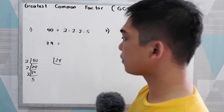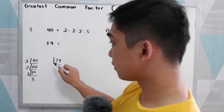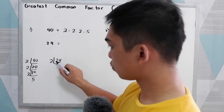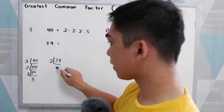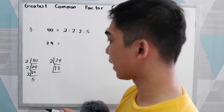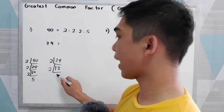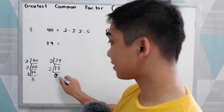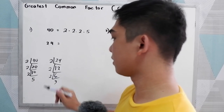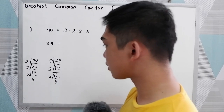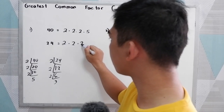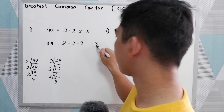How about 24? 24 is divisible by 2. 24 divided by 2 is 12. 12 is divisible by 2, giving us 6. 6 is divisible by 2, giving us 3. Now the prime factors of 24 are 2 times 2 times 2 times 3.